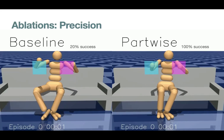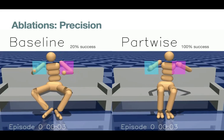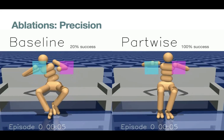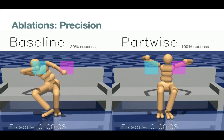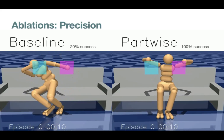Partwise MPC proves especially effective when the task is precise and different parts act independently. Here, the objective is to start in the middle and touch each of the four corners of the squares in front of the character. While the baseline method consistently fails, our partwise planner is able to successfully finish the task.